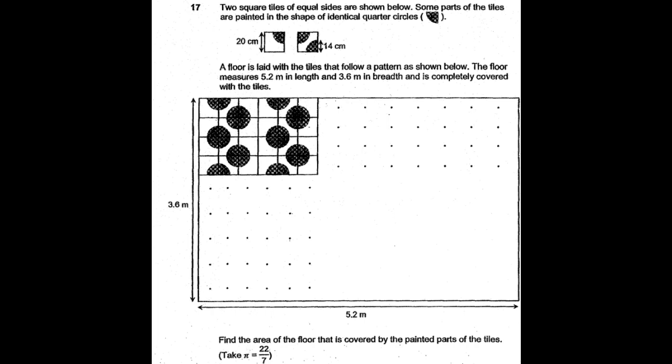Two square tiles of equal sides are shown below. Some parts of the tiles are painted in the shape of identical quarter circles. A floor is laid with tiles that follow a pattern as shown below. The floor measures 5.2 meters in length and 3.6 meters in breadth and is completely covered with the tiles.